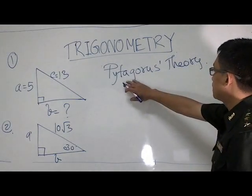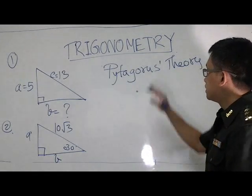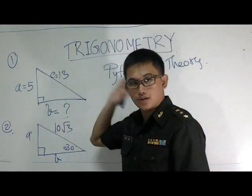Now, this is the Pythagoras theory. This theory is used with the right triangle.